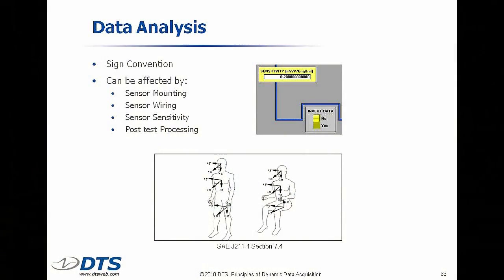Sign conventions. We know there's X — fore and aft — Y left and right, and Z up and down. But what's positive? What if the dummy is in a seated position or a standing position? You have to think about this stuff. J211, in the packets you have, actually has diagrams that help you understand that.